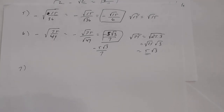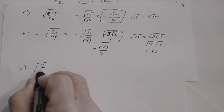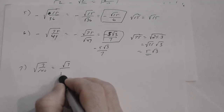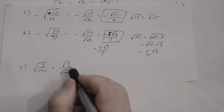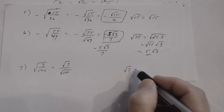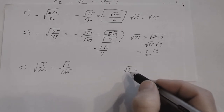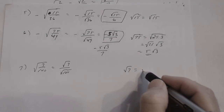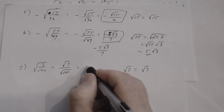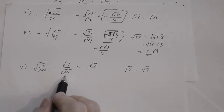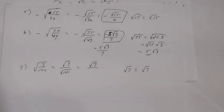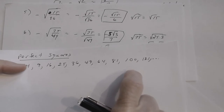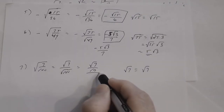Number seven: the square root of 7 divided by 100. Using the quotient rule, I write this as the square root of 7 divided by the square root of 100. Can I simplify the square root of 7? The largest perfect square that goes into 7 is 1, so the square root of 7 cannot be simplified further. The square root of 100 is 10, since 10 times 10 is 100. So the answer is square root of 7 divided by 10.